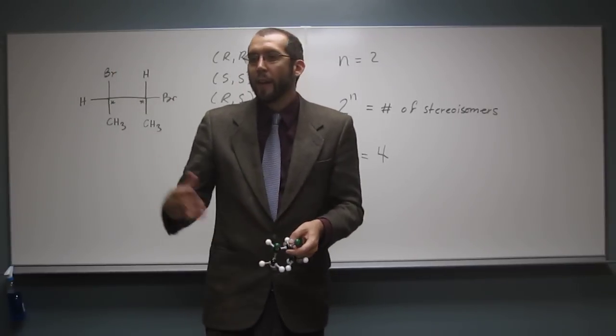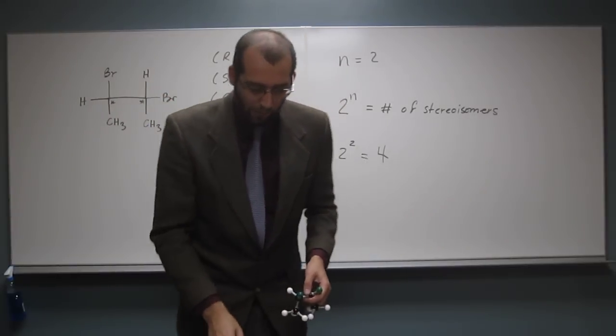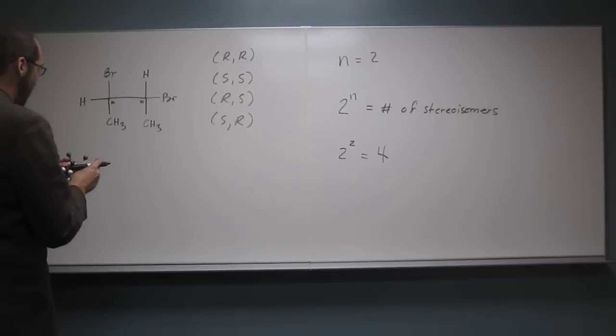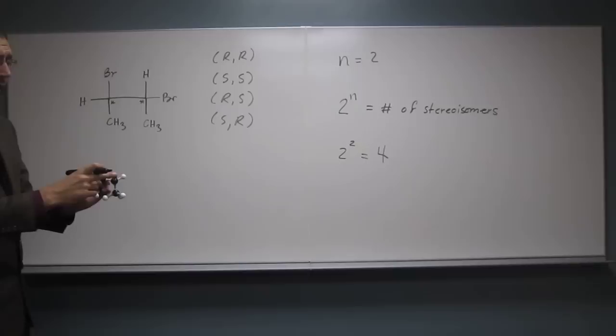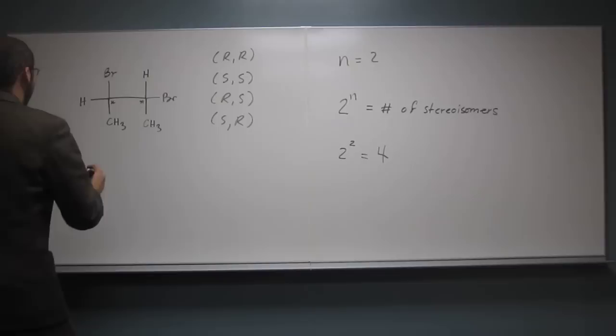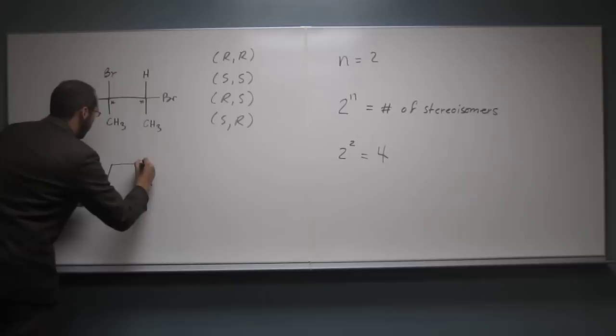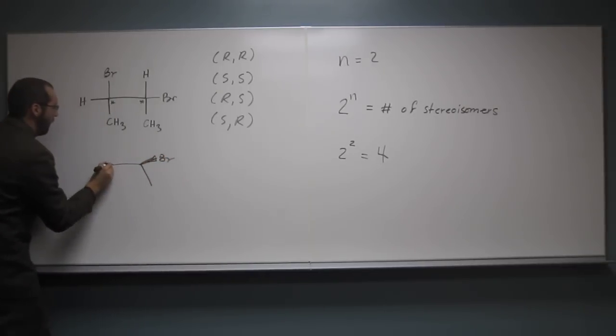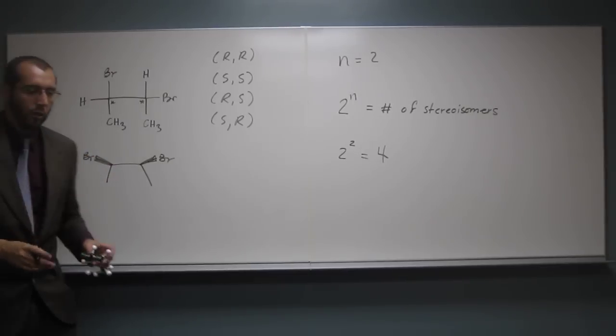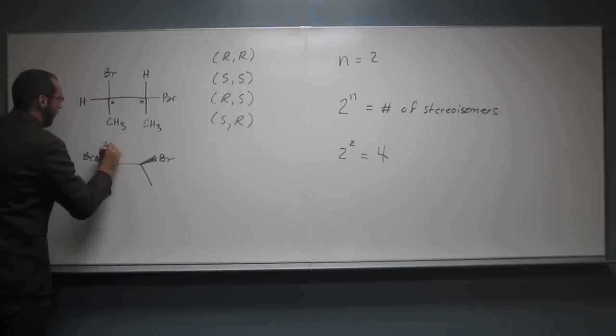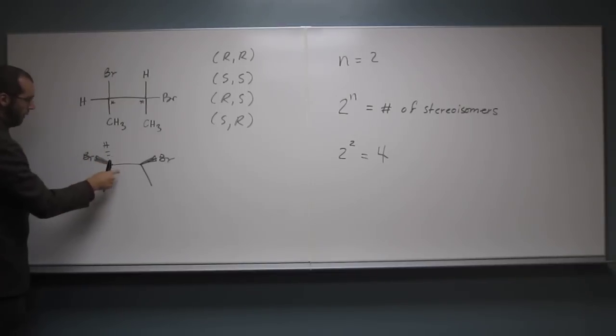So let's just go ahead and draw the three isomers up there, okay? And just prove to ourselves, once again, that there's only three. So this one has the hydrogens in the back. So already, right, we've got bromine and bromine, right? So this one should be the R,S, or S,R, whichever way of drawing it, right? So we've got one, two, three.